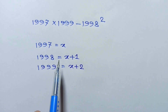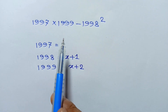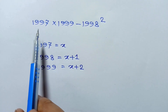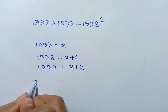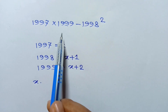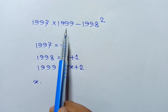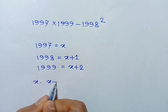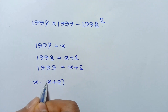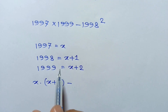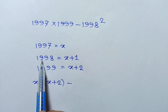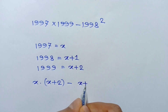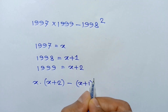Replacing these values in our given expression: 1997 is x, so it will be x times 1999, which is x plus 2, minus 1998, which is x plus 1, squared.